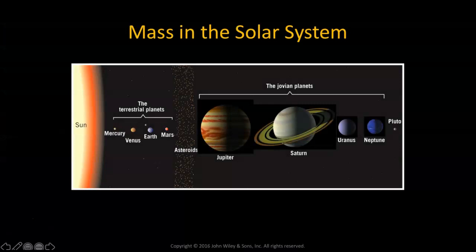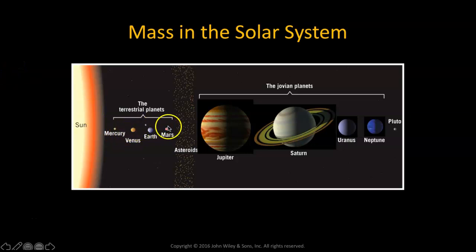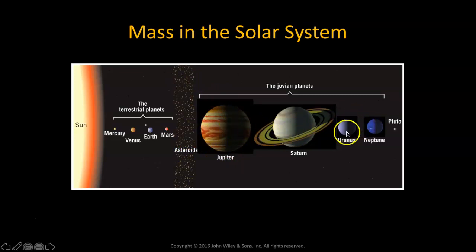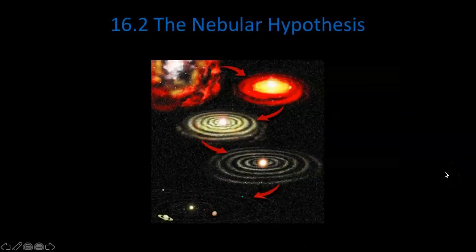Here's an example of mass distribution in the solar system, where you have your terrestrial planets with hard, rocky surfaces, an asteroid belt held together by Jupiter, and then the Jovian planets — the large gas giants. You can look at the size difference here; it's really, really incredible. All of these clues lead us to the nebular hypothesis.